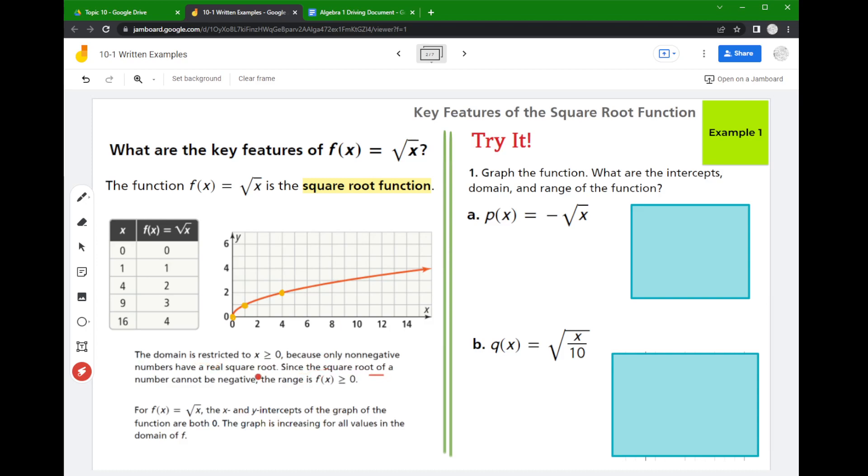And since the square root of a number cannot be negative, the range is that the function is greater than 0 or y is greater than 0. It could also be equal to 0 because square root of 0 is 0. Because when you take a square root a positive number comes out, that's what causes it to be on the top side of the graph.